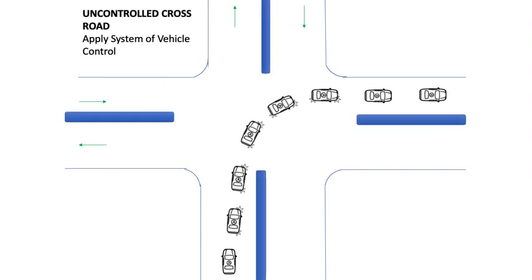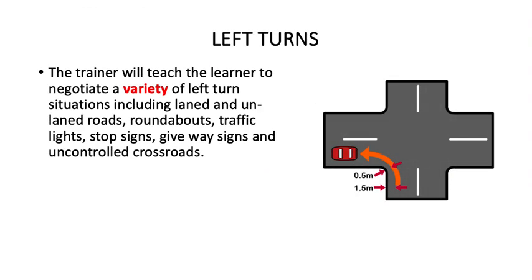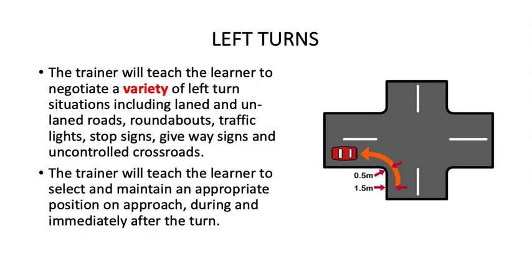We also have crossroads with uncontrolled situations — that is, no signage or traffic lights. And now let's take a look at left turns. The trainer will teach the learner to negotiate a variety of left turn situations, including laned and unlaned roads, roundabouts, traffic lights, stop signs, give way signs, and uncontrolled crossroads. The trainer will teach the learner to select and maintain an appropriate position on approach, during, and immediately after the turn.